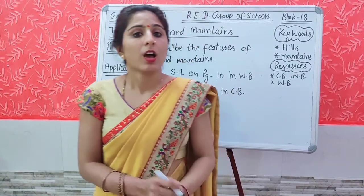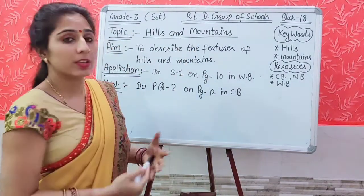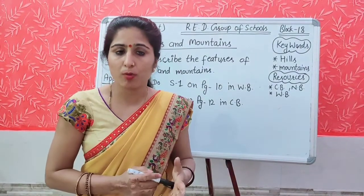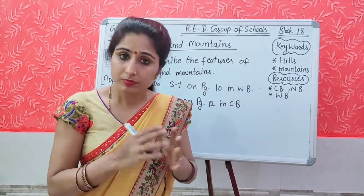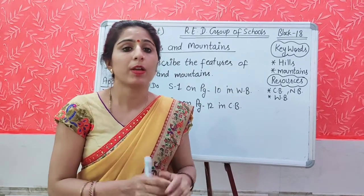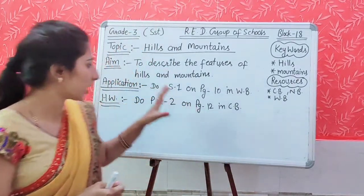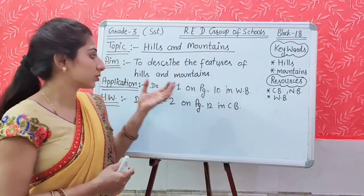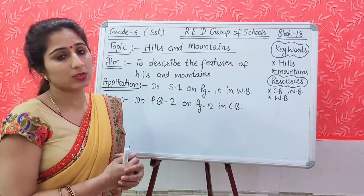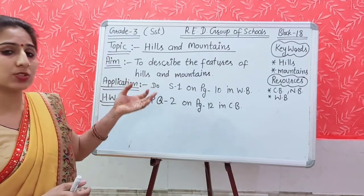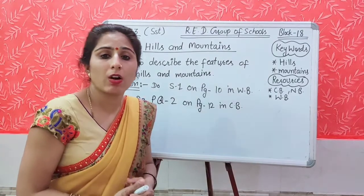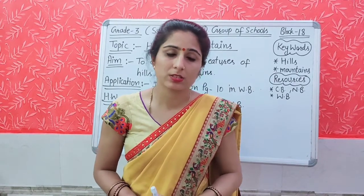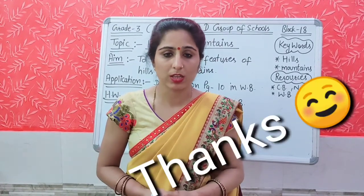Now let's summarize our today's topic — Hills and Mountains. Hills have a rounded top while mountains have pointed peaks. Hills have gentle slopes and mountains have steep slopes, and most mountains are covered with snow. Today we have achieved our aim successfully. Be ready for the next class with your content book, notebook, and workbook. Thank you, have a nice day.